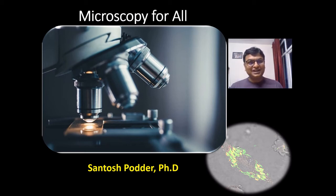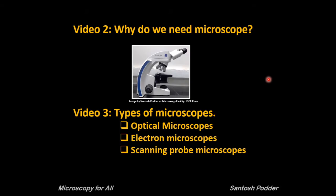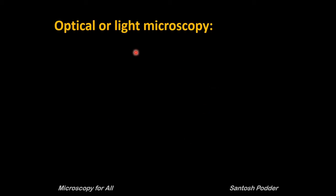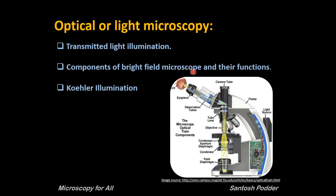Hi everyone, this is Shantosh and you are watching my YouTube channel Microscopy for All. In my earlier videos I talked about why we need a microscope and types of microscopes, where we got an overall idea about different types of microscopes. In this video, let's start with optical or light microscopy, where we will learn about transmitted light illumination, components of a bright field microscope and their functions, and lastly how to check color illumination in your microscope, which is very crucial before you start with your microscopy.